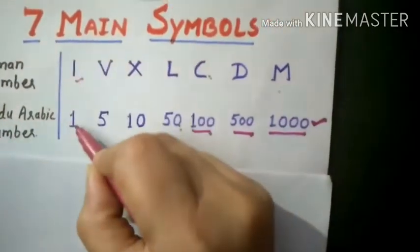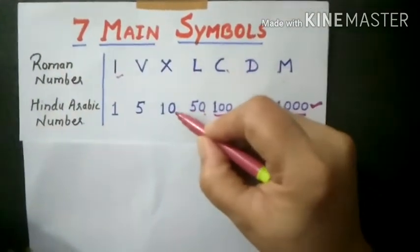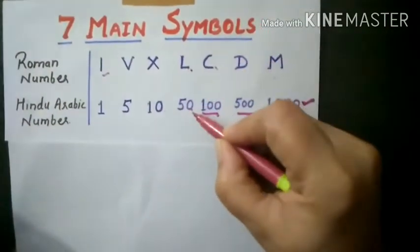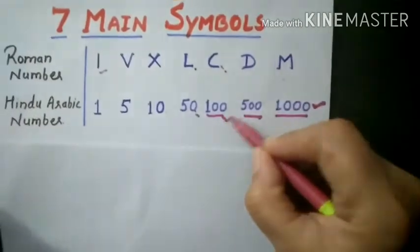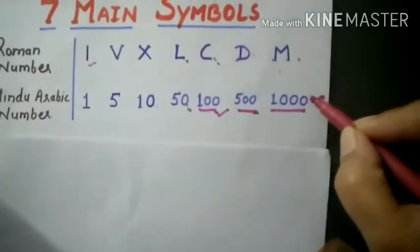I represents 1, V represents 5, X represents 10, L represents 50, C represents 100, D represents 500, M represents 1,000.